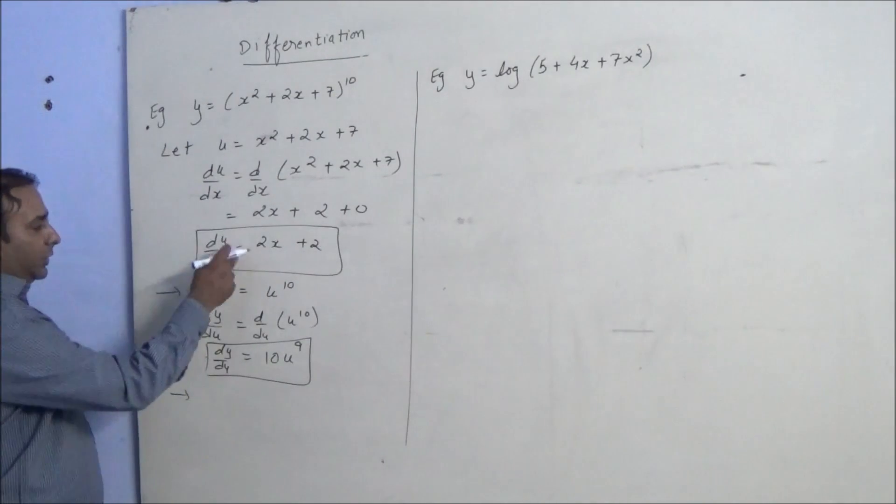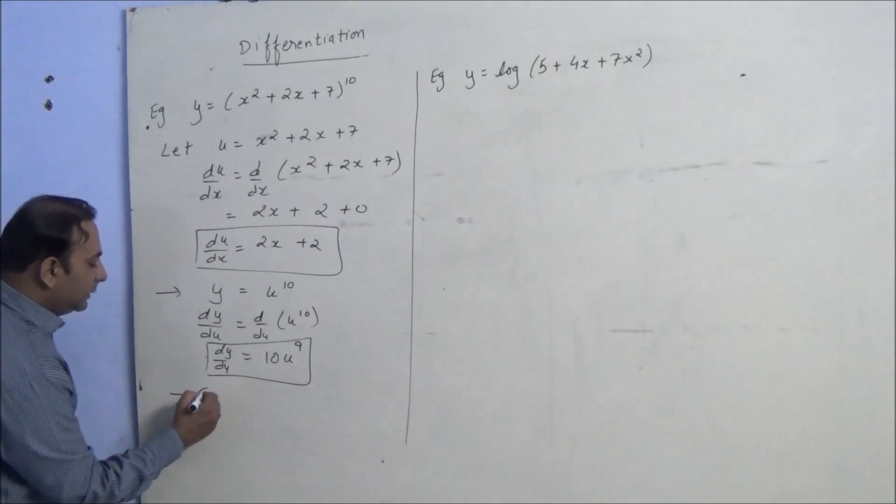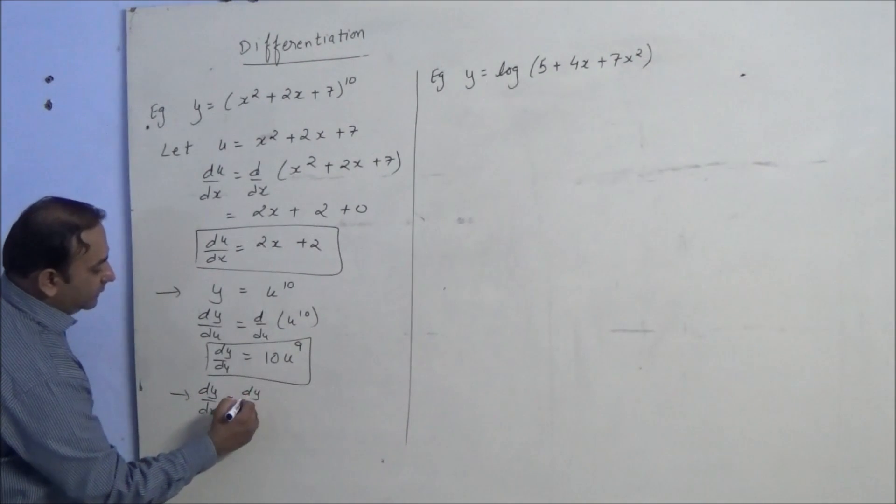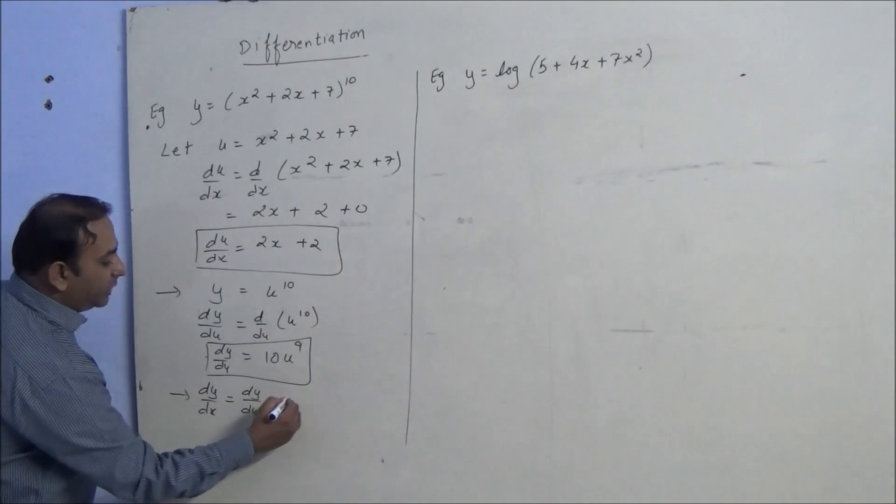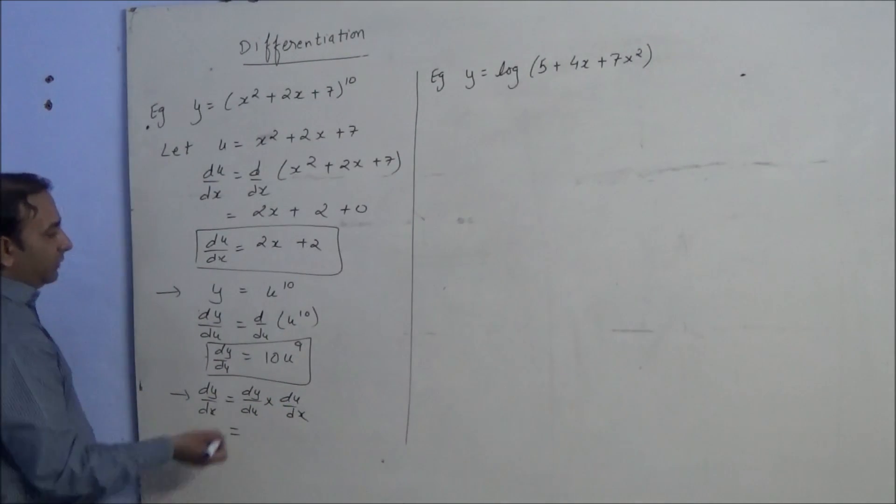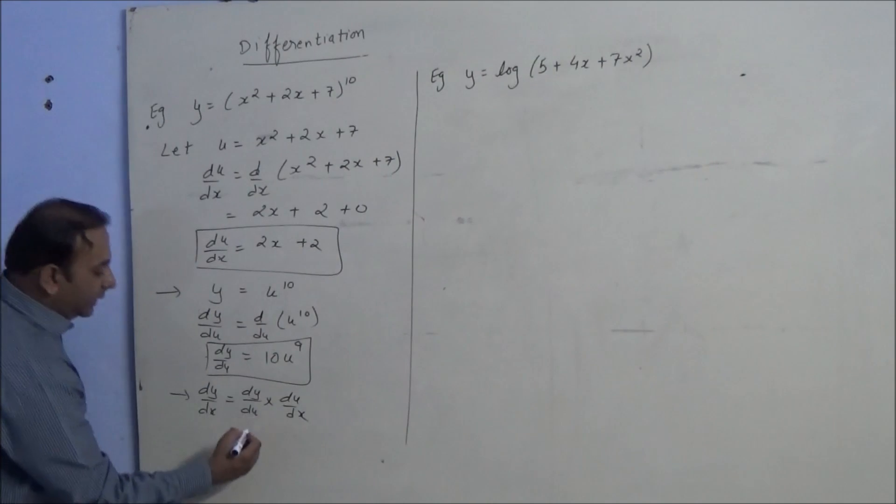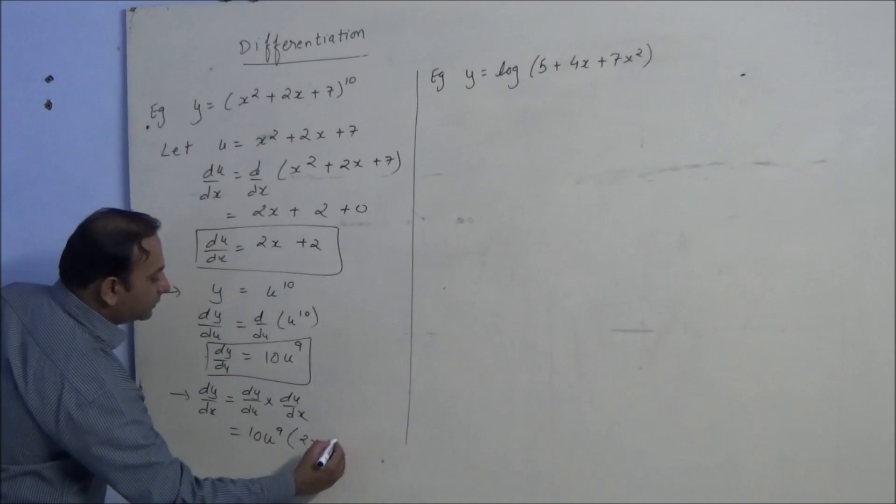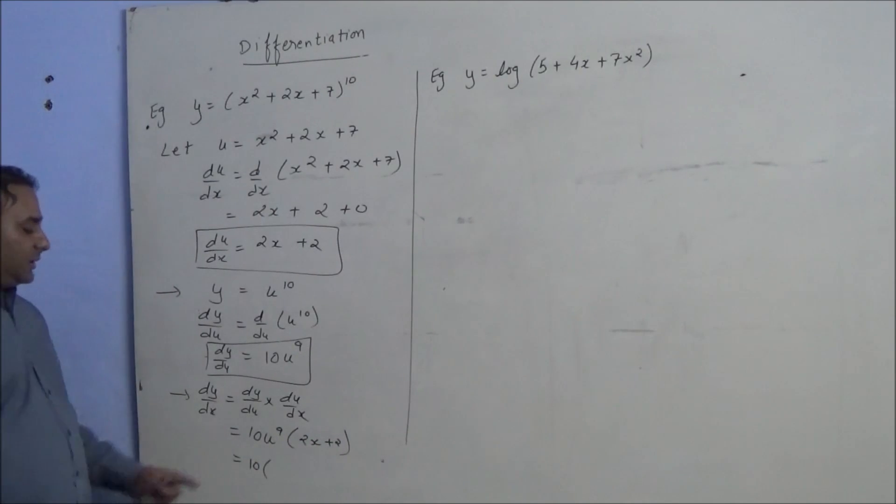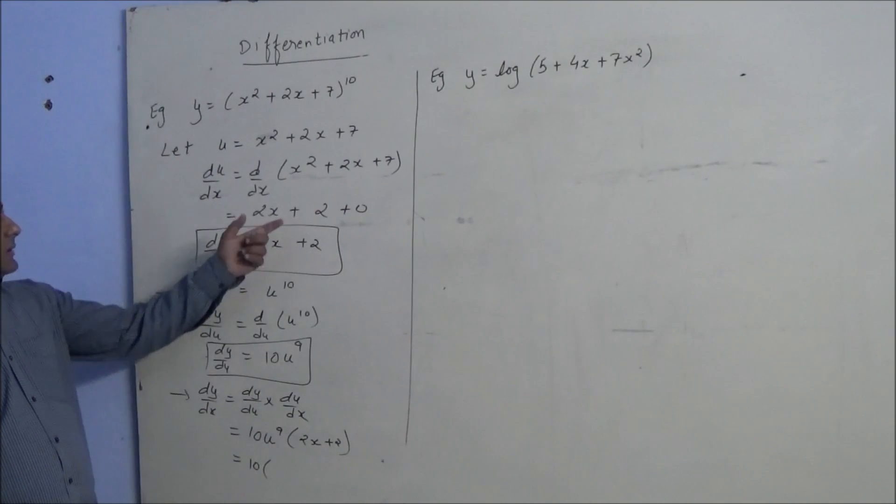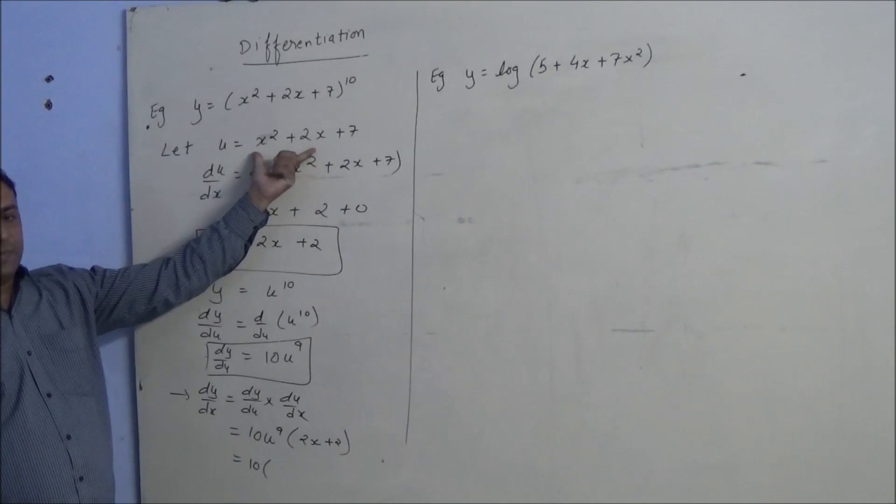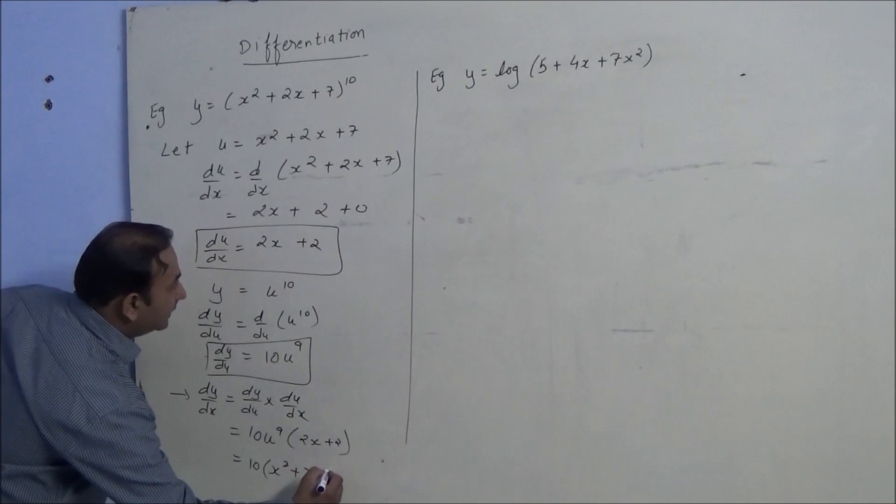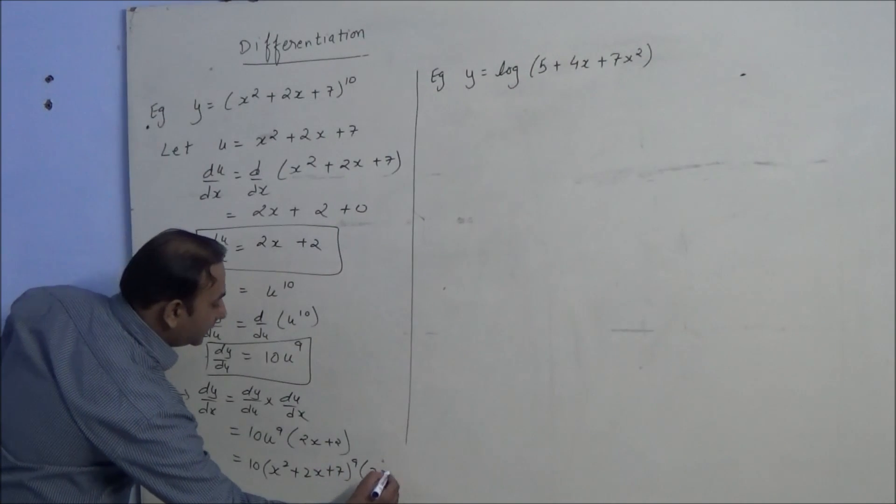Now putting these two values in the formula, dy by dx equals dy by du into du by dx. So dy by du is 10u raised to 9 and du by dx is 2x plus 2. Now substitute the value of u, that is this bracket: x squared plus 2x plus 7. So at the place of u we write x squared plus 2x plus 7 raised to 9, times 2x plus 2.